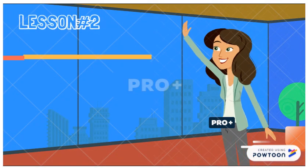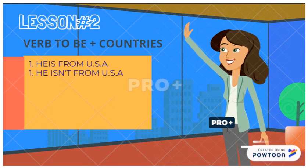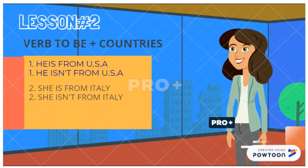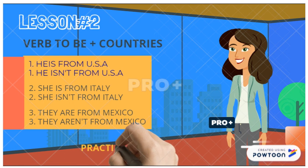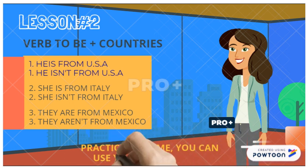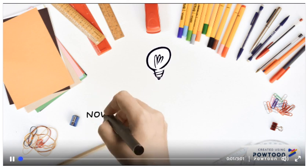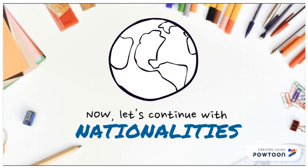Let's continue. Today in this lesson we practiced the verb to be with countries and nationalities in negative and affirmative sentences. Please practice at home — you can use your dictionary. Now let's continue with the rest of the vocabulary: nationalities.